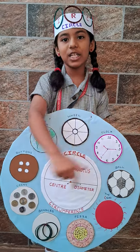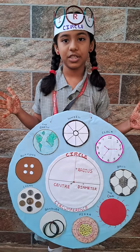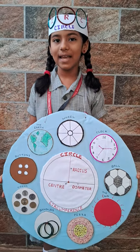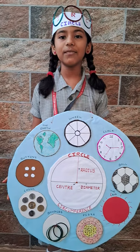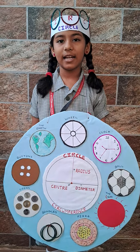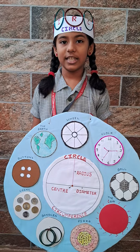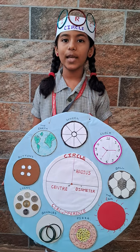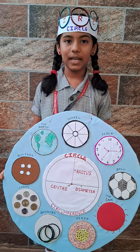I am round in shape and have no corners or edges. In geometry, I can be defined as a closed two-dimensional figure formed by a set of points that are at a fixed distance called radius from the fixed point called center on the plane.